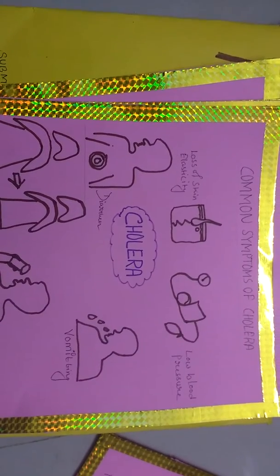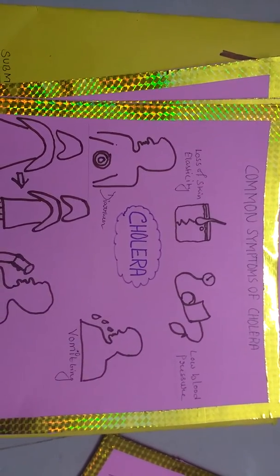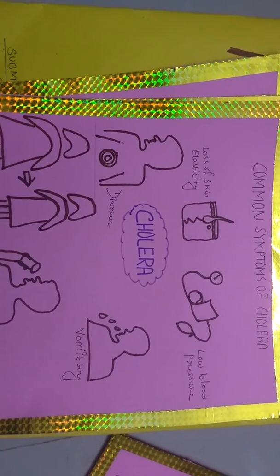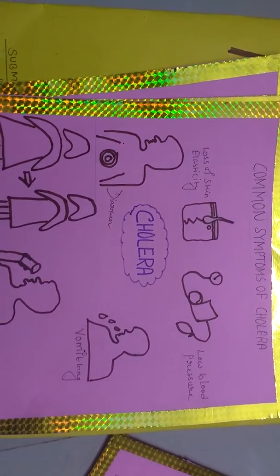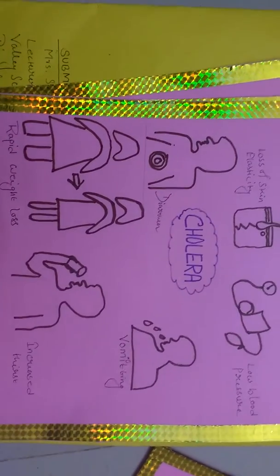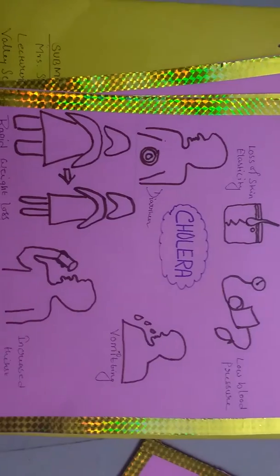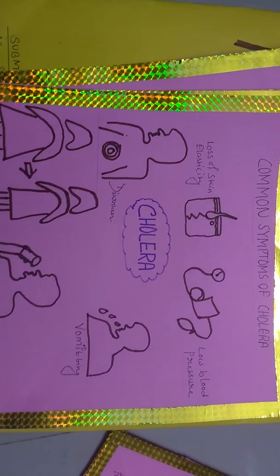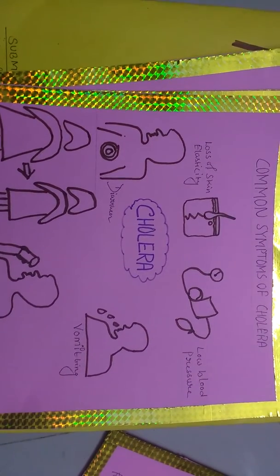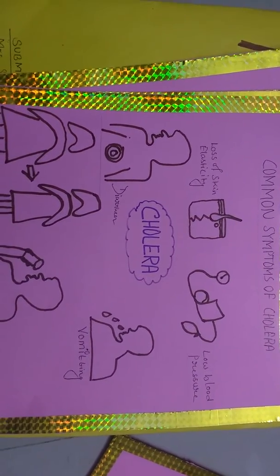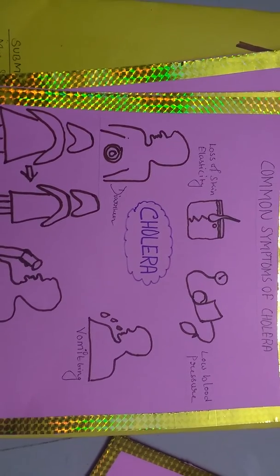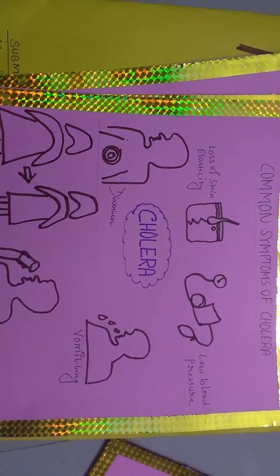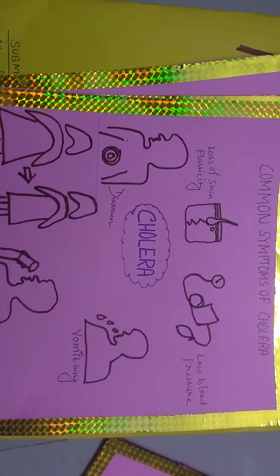These are the common symptoms of cholera: loss of skin elasticity, low blood pressure, diarrhea, vomiting, rapid weight loss, and increased thirst. You can contain almost all the symptoms with simple outline pictures — very easy and understandable.